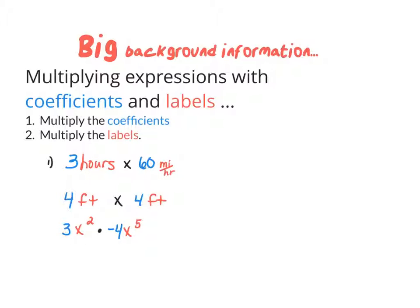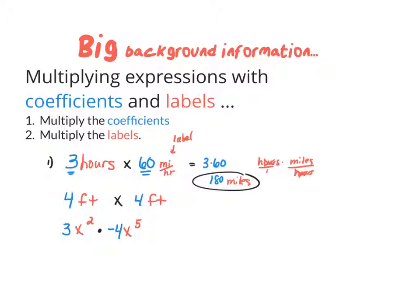Our first example is a real-life one. If you were driving at 60 miles per hour — a coefficient that tells us how many and a label that tells us of what — and you drove for 3 hours, your answer is 180 miles. We multiply the coefficients: 3 times 60 is 180. Then we multiply the labels: hours times miles per hour — the hours cancel — and we're just left with miles.